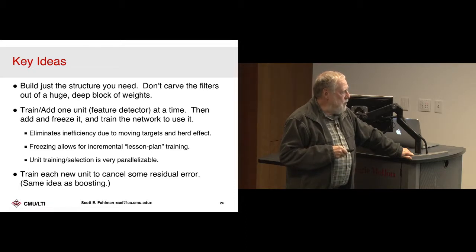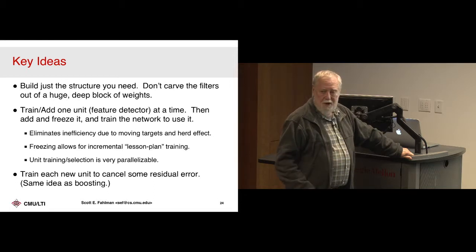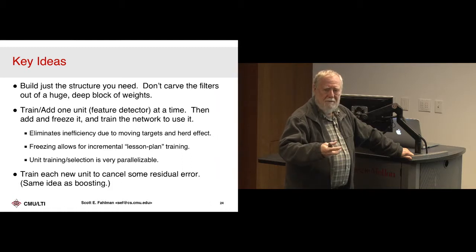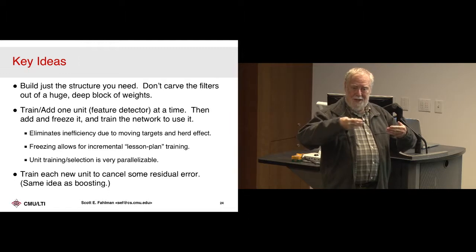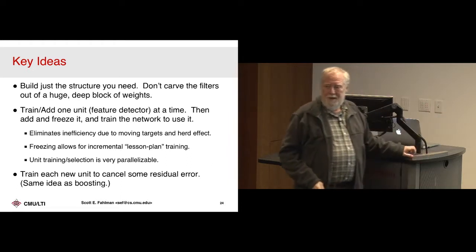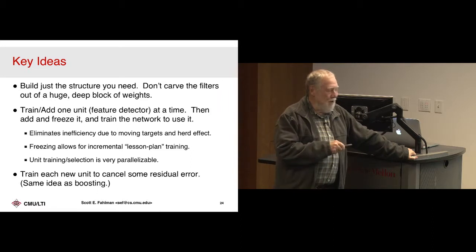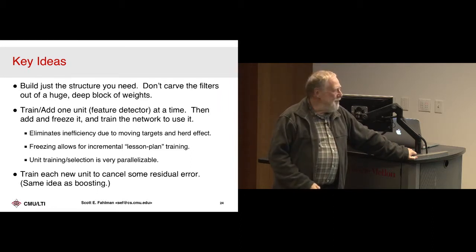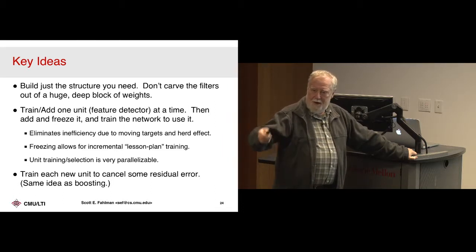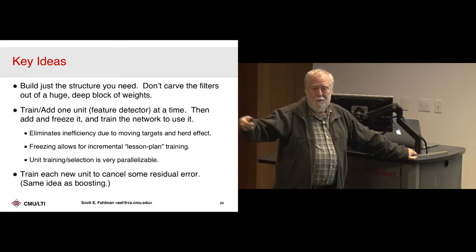Unit training and selection is very parallelizable — almost all the time goes into training those candidate units, not the output weights, and that's very easily parallelizable onto as many machines as you've got. You train each unit to cancel some residual error. You may have heard about boosting — if you have a weak approximator, better than chance but weak, you can take another one that's better than chance in a different way and combine them, keep adding. That's what we're seeing here. This is the boosting idea — I'm not famous for inventing boosting because I didn't do all the convergence theorems, but this really was the same idea.